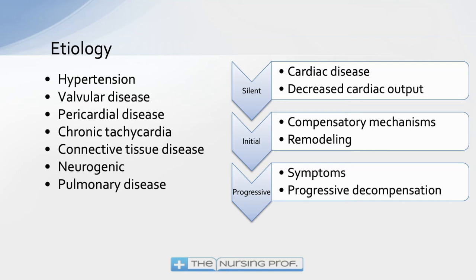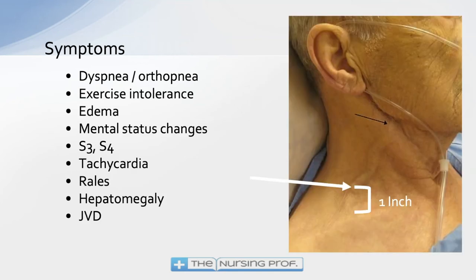Then we move into the progressive phase where we start to see symptoms — this is where we say this patient has heart failure, and then we get into progressive decompensation. Symptoms include dyspnea, orthopnea — patients will say they can't sleep unless they sleep in a chair or with lots of pillows. Exercise intolerance — going up a flight of stairs they become winded. Also edema and mental status changes.